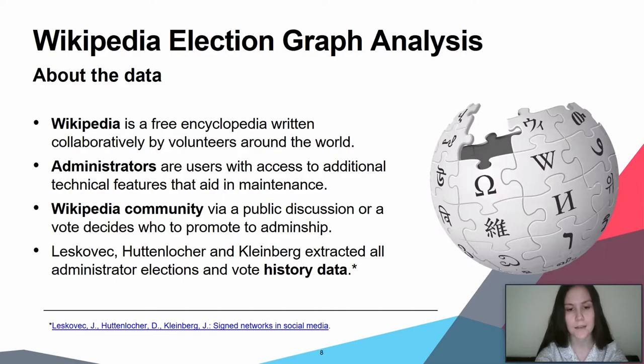We apply the devised approach to the structural analysis of the signed network describing the relationship between Wikipedia users that participated in administrator elections. As we know, Wikipedia is a free encyclopedia written collaboratively by volunteers around the world. We analyze data obtained from the network that describes the results of Wikipedia administrator elections. Wikipedia is an encyclopedia whose operation is supervised and controlled by a relatively small number of administrators. These administrators are the users with additional rights and access to technical features that aid in maintenance.